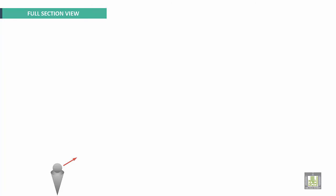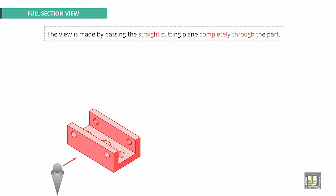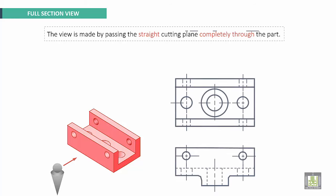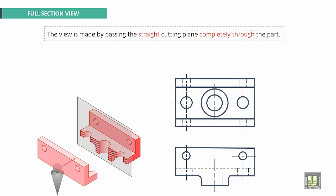We'll start with Full Section View. This view is made by passing the straight cutting plane completely through the part. Here we have the part with original views using dashed lines. If we take the cross-sectional plane and pass it through all the part, it makes the section. This is called the Full Section View, and we'll get the sectional view with dashed lines.